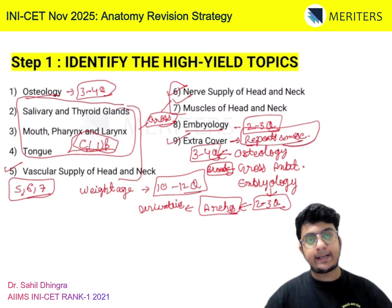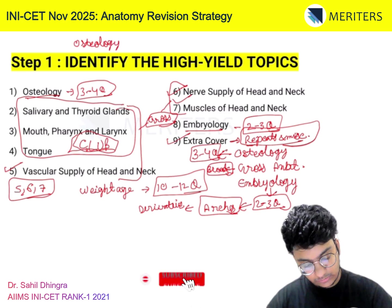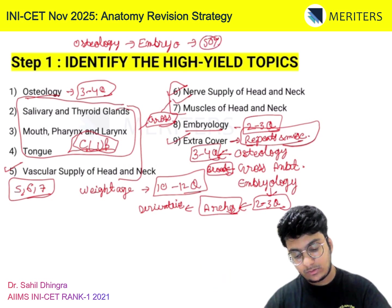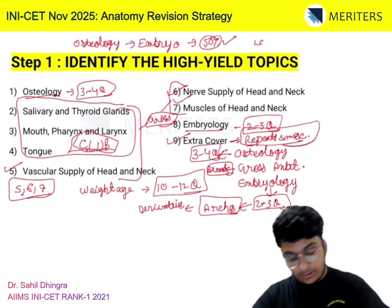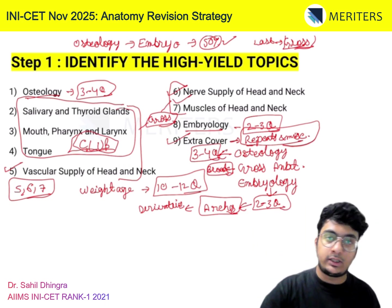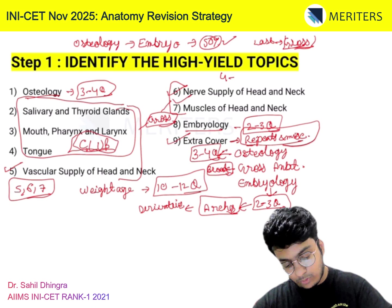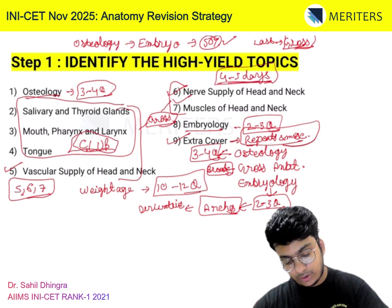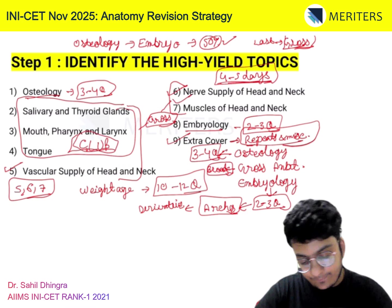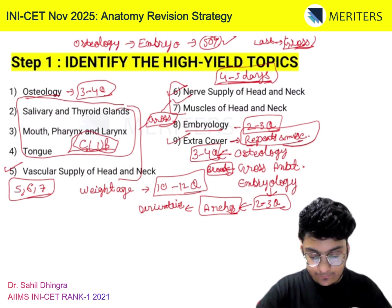When doing anatomy, the goal is to first do Osteology and Embryology. Once you finish those two, you've covered 50% of your syllabus. Then focus on Gross Anatomy — do chapters 5, 6, 7 together in one stretch, and chapters 2, 3, 4 in one stretch. You should spend around 4 to 5 days maximum on anatomy — give 1 day to Osteology and Embryology, and 2 days to Gross Anatomy.